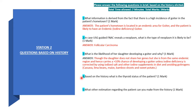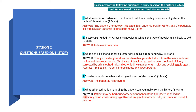Question 4: Based on the history, what is the thyroid status of the patient? The answer is the patient is hypothyroid. Question 5: What other estimation regarding the patient can you make from the history? The answer is the patient may be harboring other components of the full spectrum of iodine deficiency, including hypothyroidism, psychomotor defects, and impaired mental function.